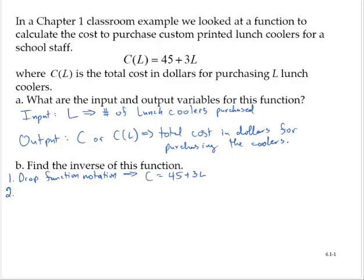Step two says, let's solve for the other variable. In this case, that's L. So to solve for L, I will subtract 45 from both sides. So C - 45 = 3L. And we'll divide by 3. And so I can write that as C/3 - 45/3 = L.